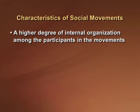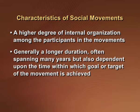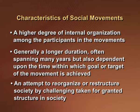A social movement is different from mob behavior. For example, people may burn a bus if the driver has run over somebody — that is mob behavior. It is also different from a protest, which is usually a short-term reaction to an event that flares up quickly and dies down quickly. To understand the difference, we can identify three important characteristics that differentiate a social movement from other types of collective behavior: first, a higher degree of internal organization among participants; second, a longer duration, often spanning years; and third, an attempt to reorganize or restructure society by challenging taken-for-granted structures.